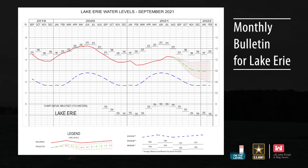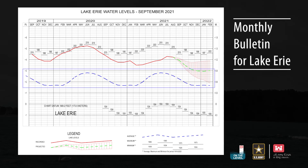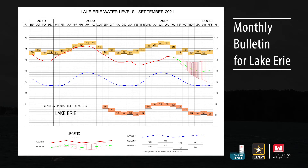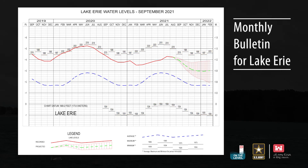Zooming in to a Bulletin graphic for Lake Erie, you will see the blue dashed line representing the long-term average water level, and hatch marks in year of occurrence for both record high and record low levels. All statistical info is based on a period of record going back to 1918.